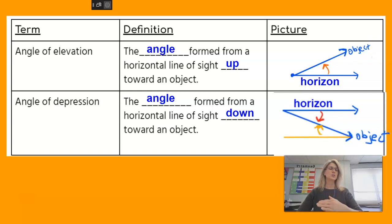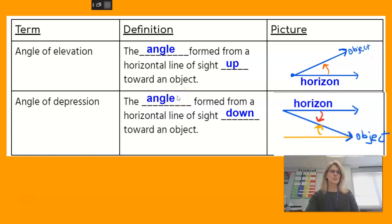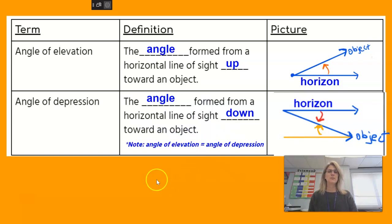I just wanted you to note that the angle of elevation and the angle of depression are congruent to each other because they are alternate interior angles. The horizons are parallel, so you have alternate interior angles. Put this note: angle of elevation will always equal the angle of depression. Now let's go apply it.